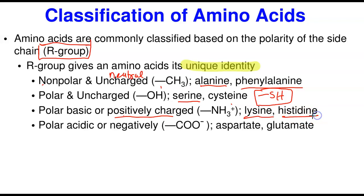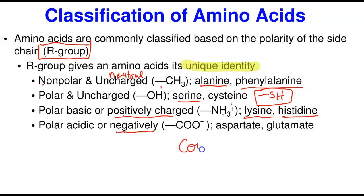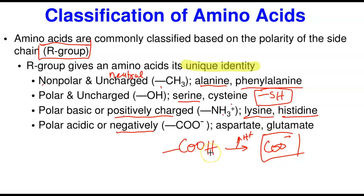The final group is the polar acidic, also called negatively charged. These have an extra carboxylic group in their side chain — not the one attached at the alpha carbon, but an additional side chain carboxylic group. This group is ionized and can easily lose a proton to become COO⁻, giving it a negative charge. That is why we say they are negatively charged or acidic.